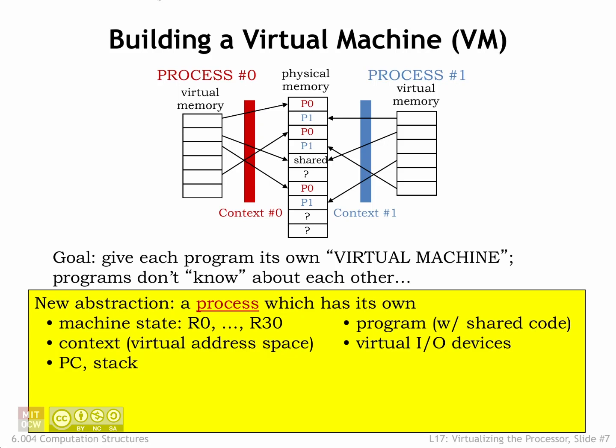Let's create a new abstraction called a process to capture the notion of a running program. A process encompasses all the resources that would be used when running a program, including those of the CPU, the MMU, input and output devices, etc.